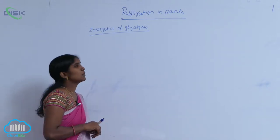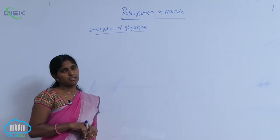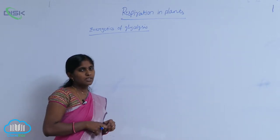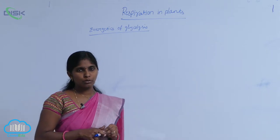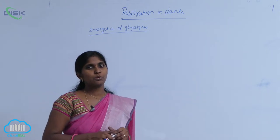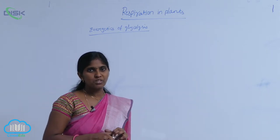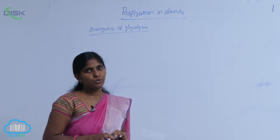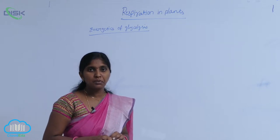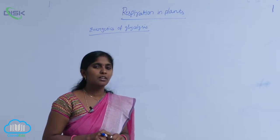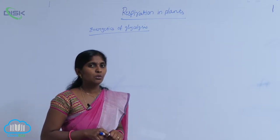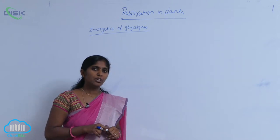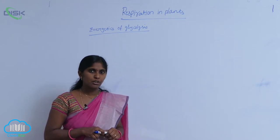Energetics of glycolysis. Glycolysis means breakdown of glucose into two simple compounds — pyruvic acid. One glucose molecule is converted into two pyruvic acid molecules.